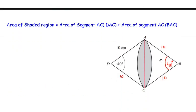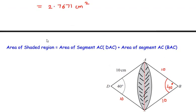So now we can write it as: area of the shaded region, which is this part, is equal to area of the segment AC belonging to the sector DAC. Let me highlight it—it is going to be this region, this segment, plus area of segment AC belonging to the sector BAC. Since both the regions are same, we are going to take this answer, that is 2.7671, and add it again.